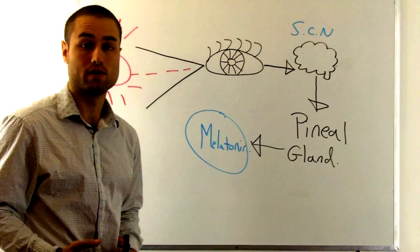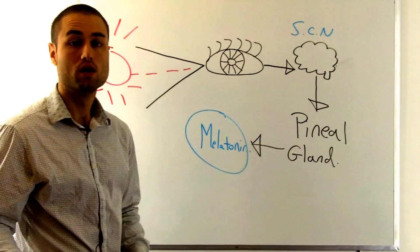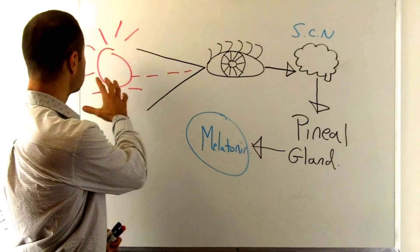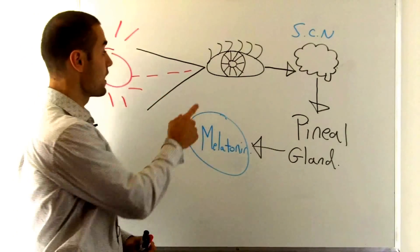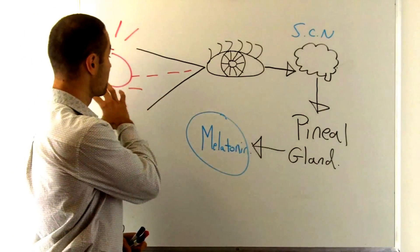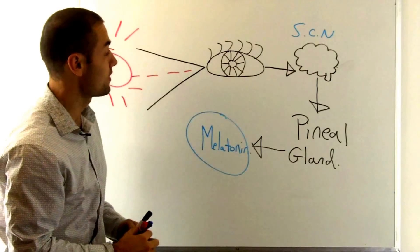Today I'll be discussing how melatonin is produced in your body. Throughout the day, the sun is shining its photons and your eye is receiving the photonic light, interpreting it.